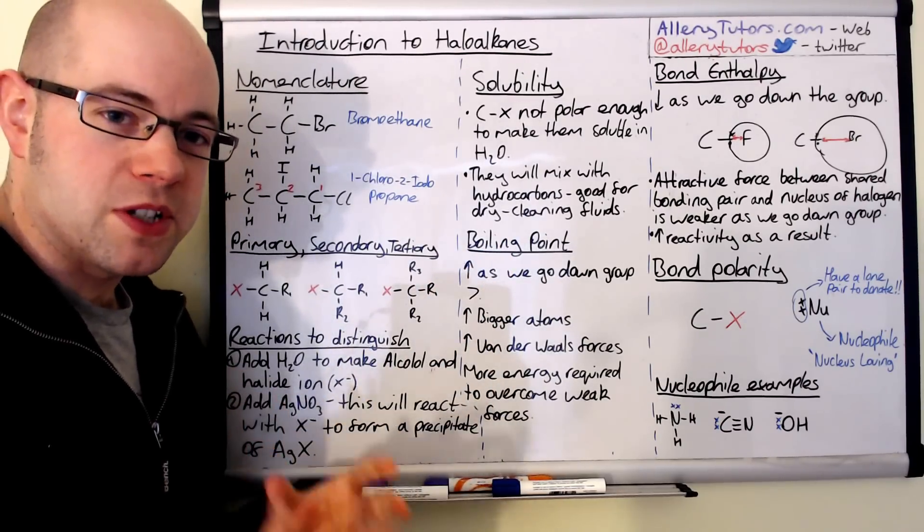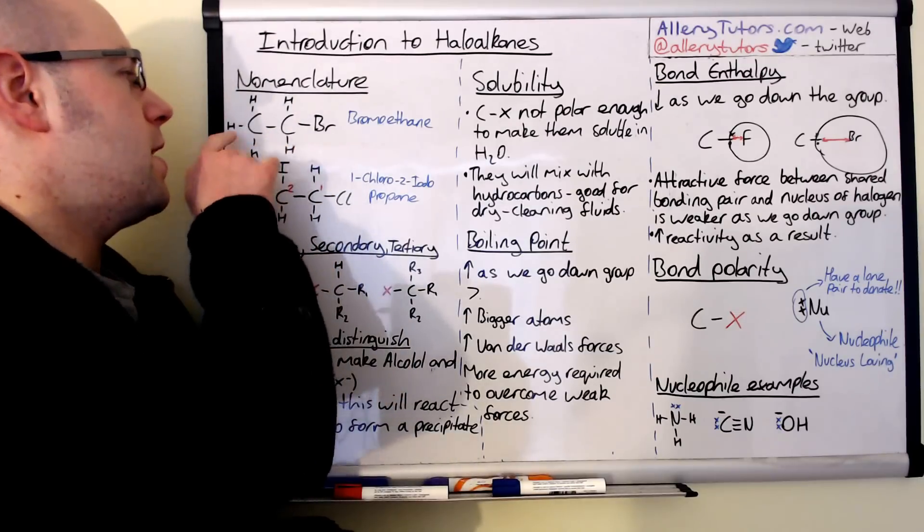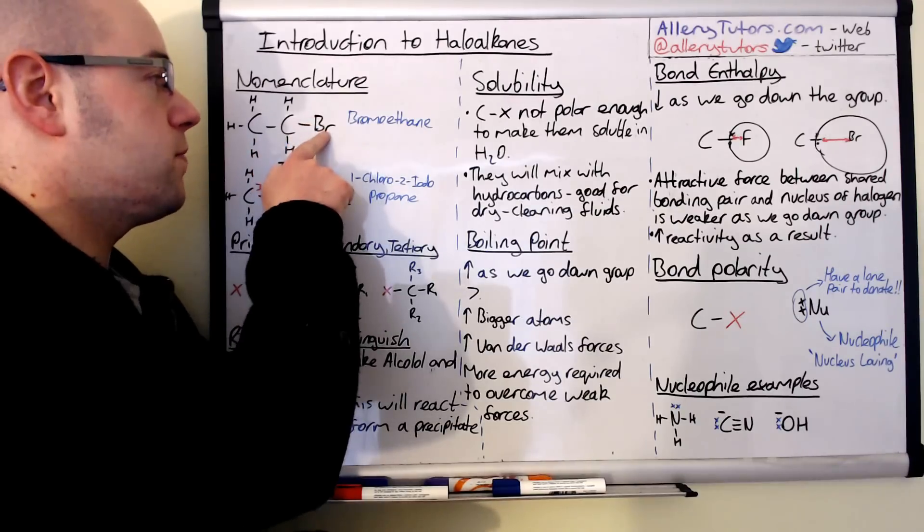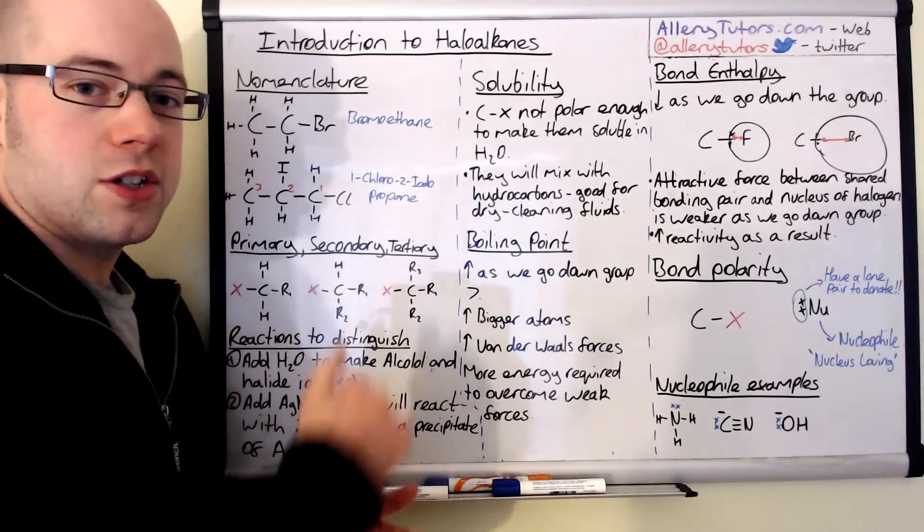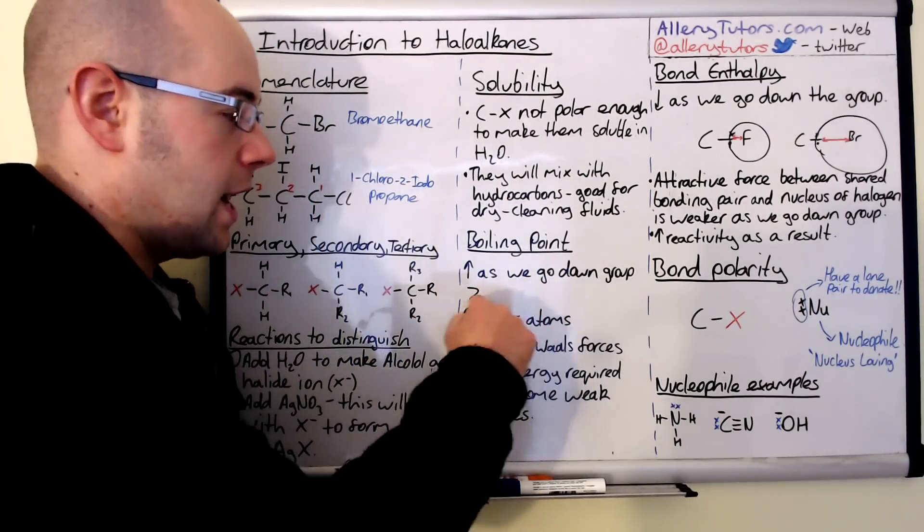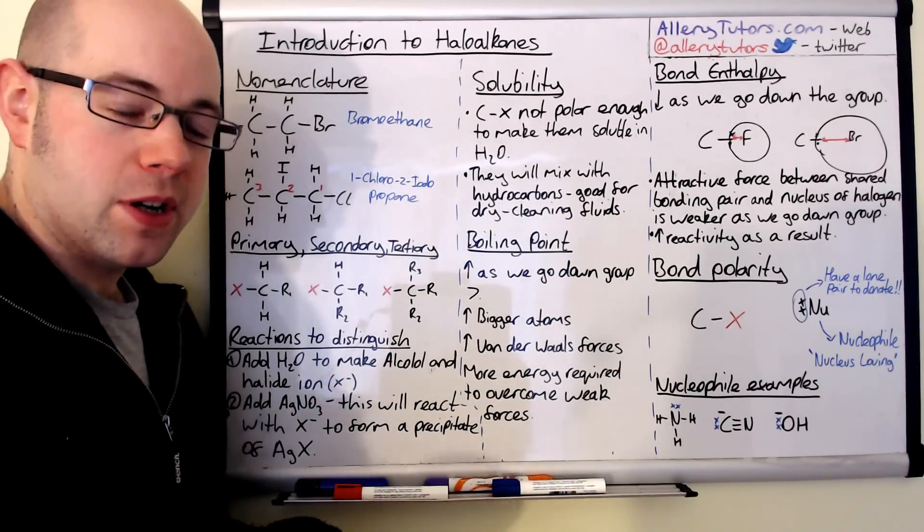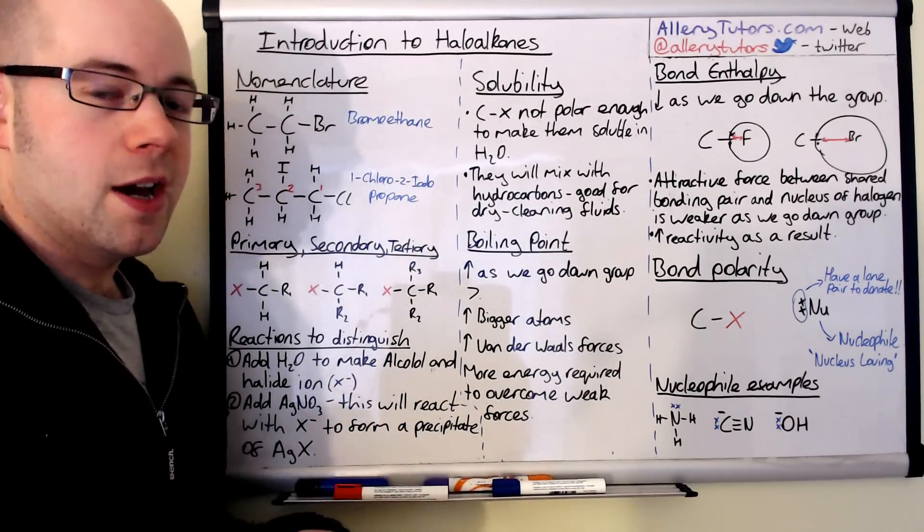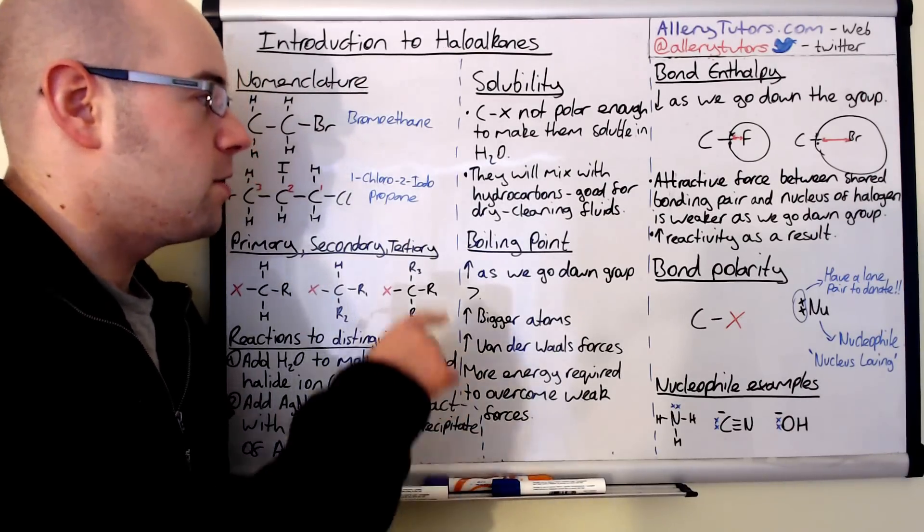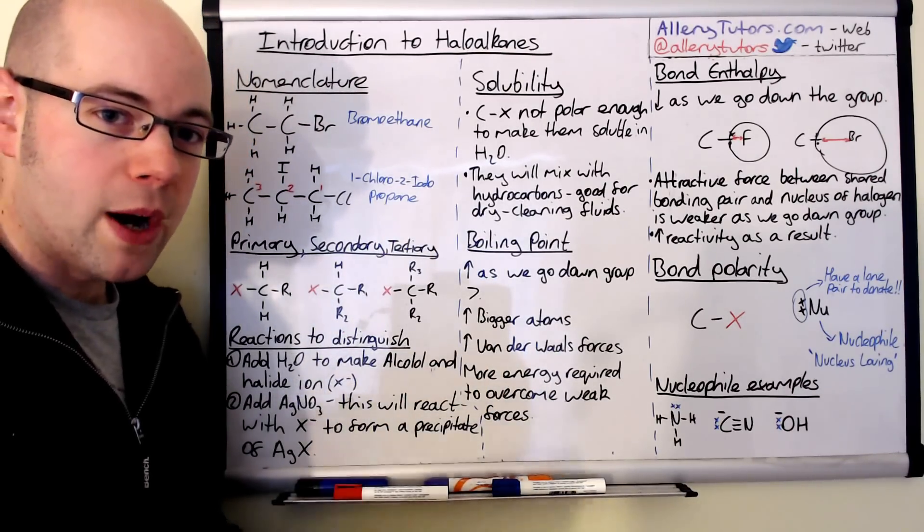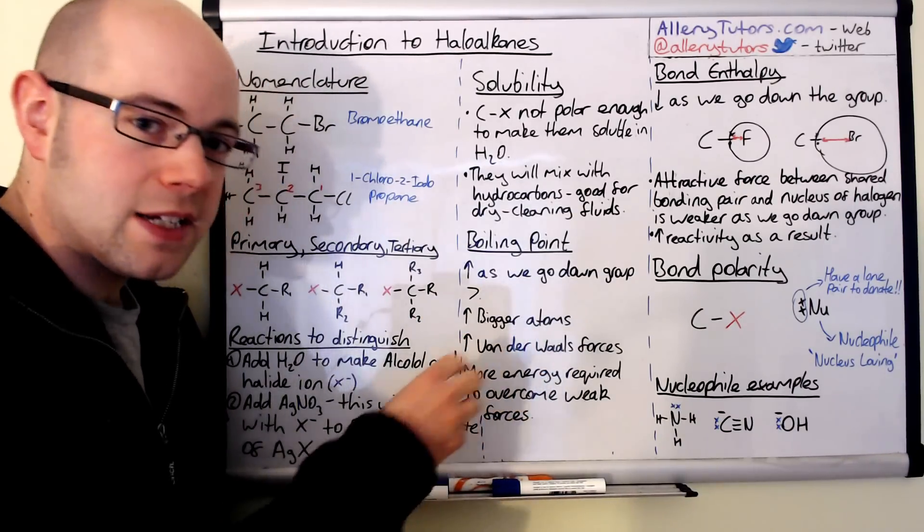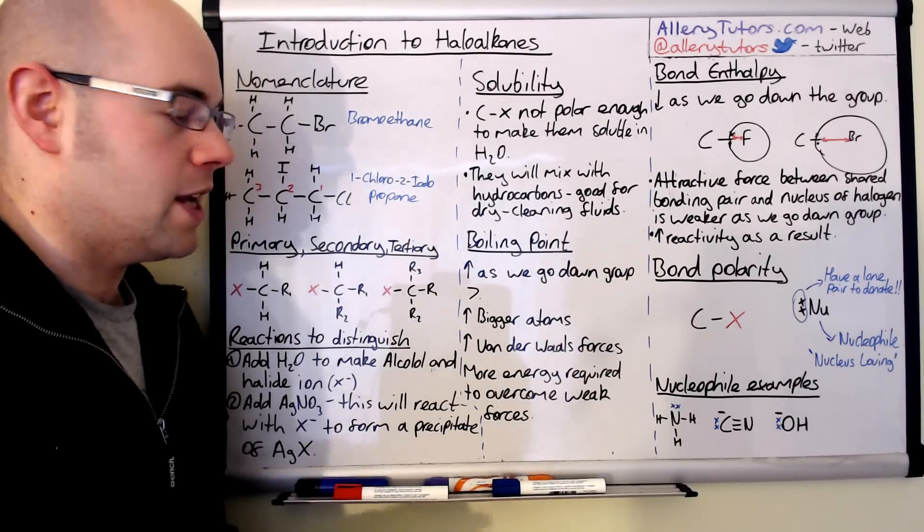Boiling point. As we go down the group, so for example if we have a haloethane molecule starting with a fluoride molecule, then chlorine, then bromine, then iodine, then astatine. As we go down group seven, the atom or the halogen gets a lot bigger. Because this atom is bigger it means we have more electrons. Because we have more electrons that means we have greater van der Waals forces as we go down the group. Because we have greater van der Waals forces, it means we need more energy to overcome these forces and that increases the boiling point. So the size of the halogen plays a big role in the boiling point of the molecule.